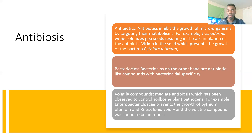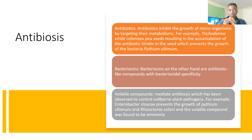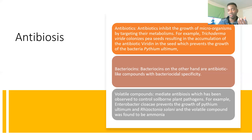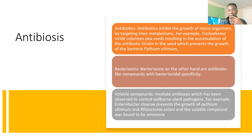Bacteriocins, on the other hand, are antibiotic-like — they're not exactly considered antibiotics, but they function almost like antibiotics. They are more specific in their action; they kill specific bacteria. This is compared to antibiotics, which can sometimes be broad-spectrum, killing a wider range of organisms.